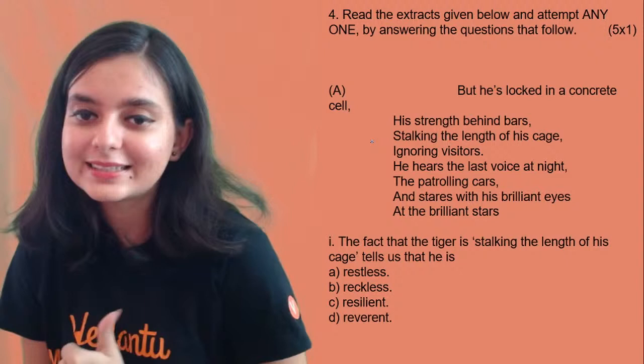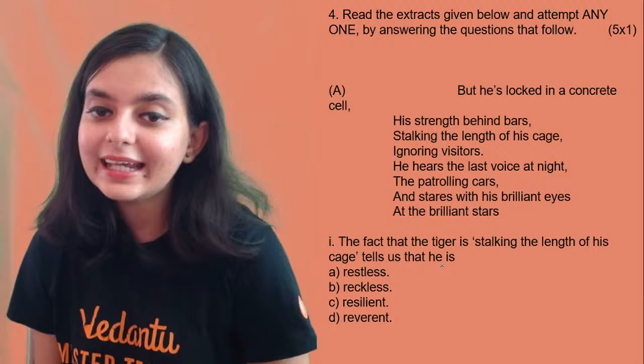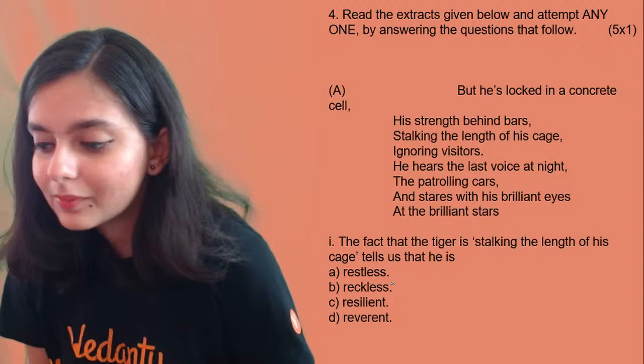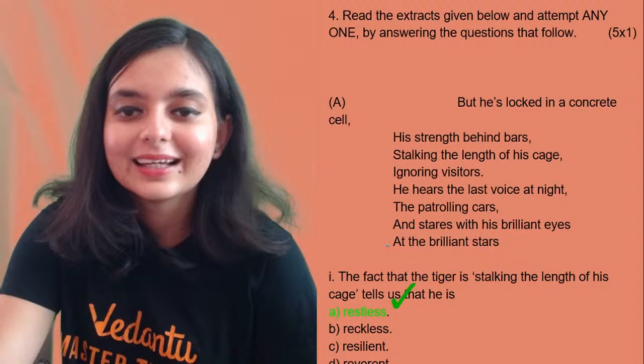Tiger in the Zoo — amazing! The fact that the tiger is stalking the length of the cage tells us that he is restless. Which is the correct option? Most of you are saying A — let's see. Absolutely correct, the tiger is restless.